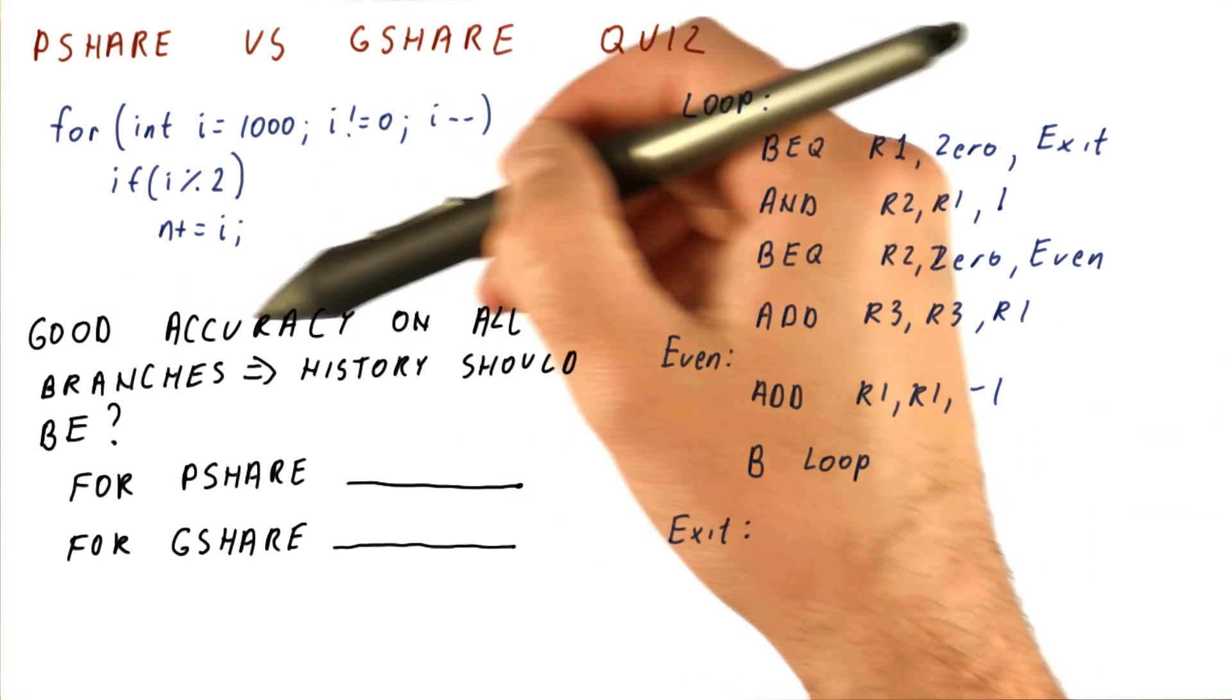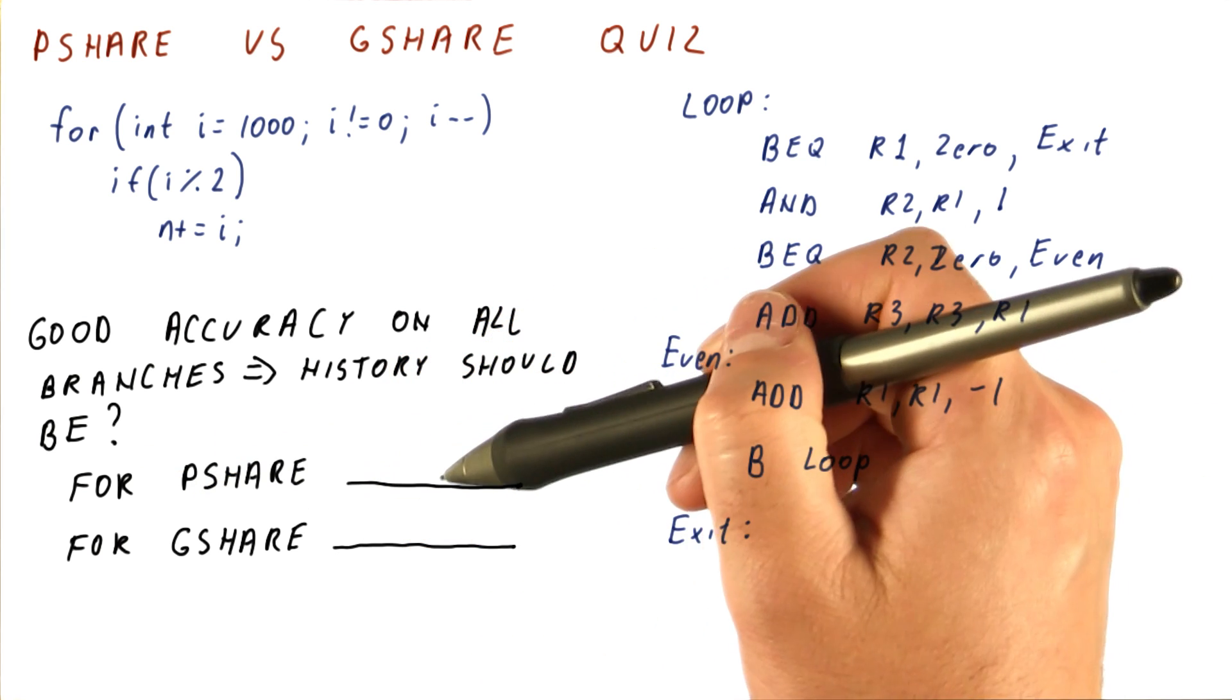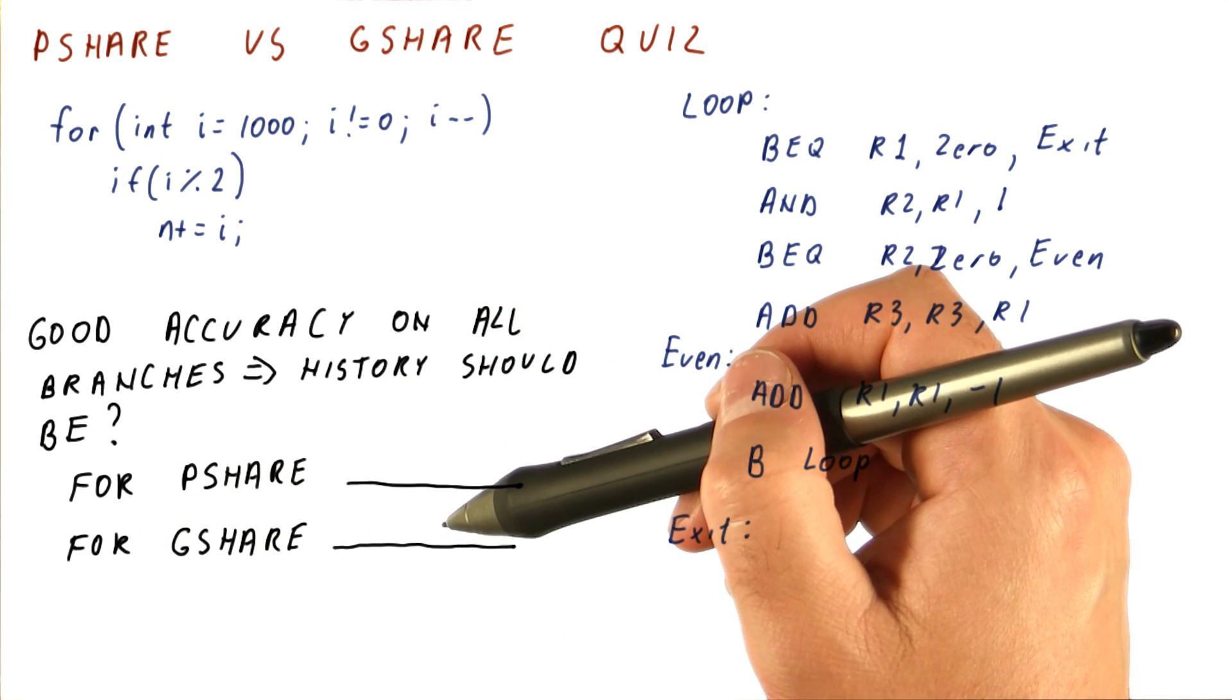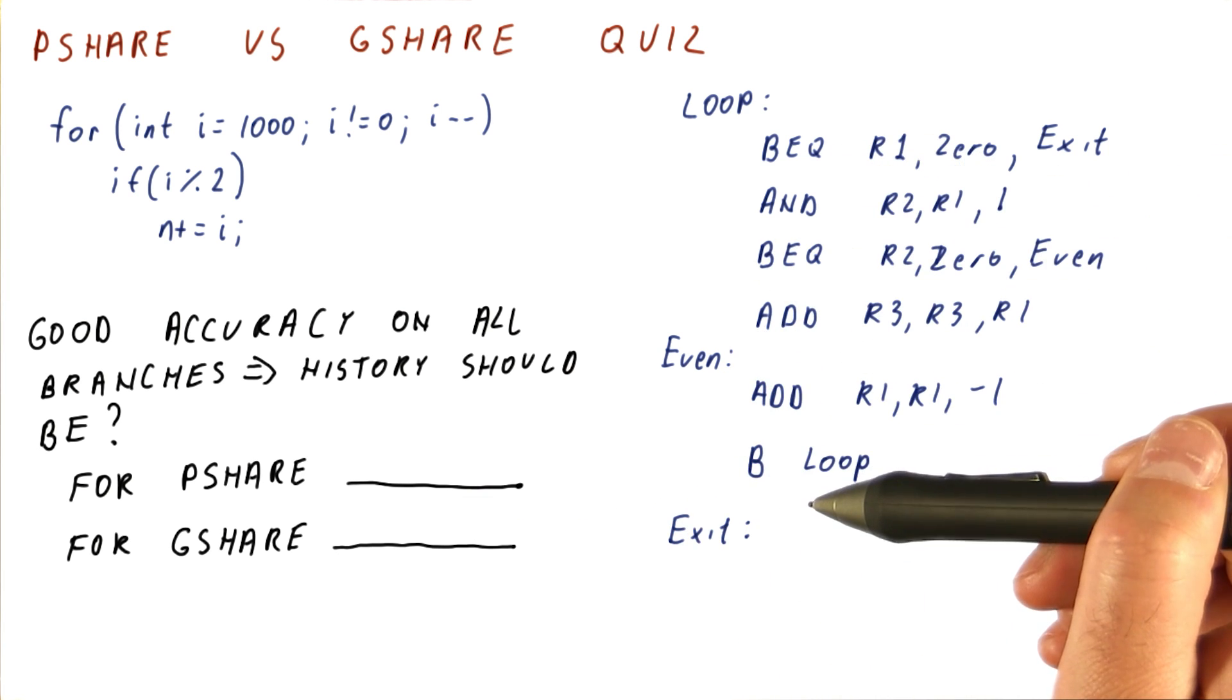If we want to get good accuracy on all of the branches in this code, then the history should be how much for p-share, write the number here. And for g-share, write the number here. So we are just talking about how many bits of history we need to get good prediction accuracy for all of these branches.